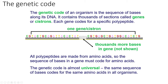The genetic code is what's classed as universal. That means the same sequence of bases codes for the same amino acids in all organisms. So if a codon codes for serine in a human being, it's serine in a cabbage, serine in a rabbit or a cat.